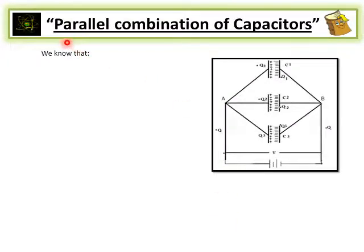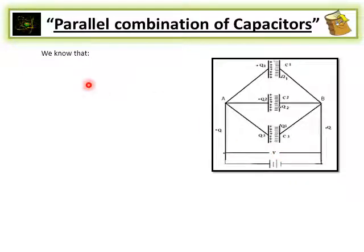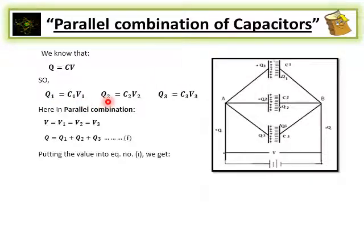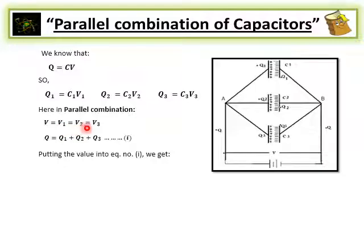Now we are going to derive the relation for the parallel combination of capacitors. We have three capacitors with capacitances C1, C2, and C3, with charges Q1, Q2, and Q3, connected in parallel with a battery of voltage V. Using Q = CV: Q1 = C1V1, Q2 = C2V2, Q3 = C3V3. In parallel combination, the potential difference is the same on each capacitor: V = V1 = V2 = V3. But the charge on each capacitor is different, so Q = Q1 + Q2 + Q3. This is equation number 1.